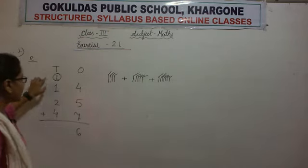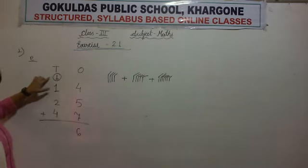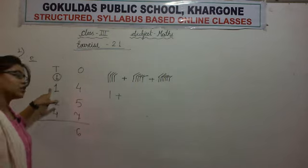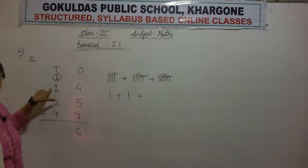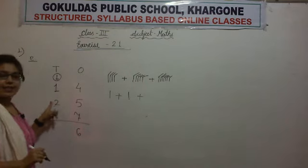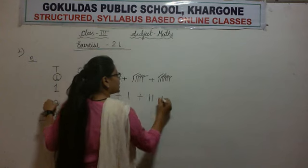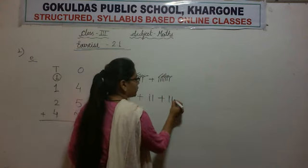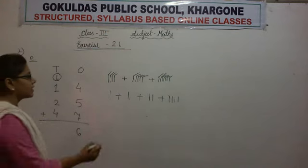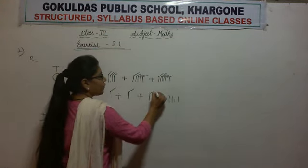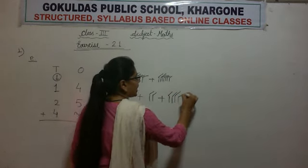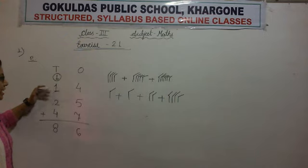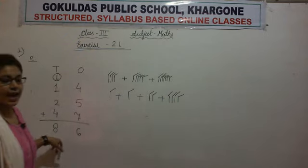Now it is turn for the 10's column. We start with the carry 1, drawing 1 stick. The next digit is 1, so we draw 1 stick. We put a plus sign because we are doing addition. The next digit is 2, so we draw 2 sticks. The next digit is 4, so we draw 4 sticks. Let us count: 1, 2, 3, 4, 5, 6, 7, and 8. We write 8 in the 10's column. So when we add 14, 25, and 47, we get 86 as the answer.